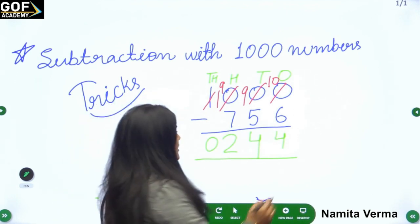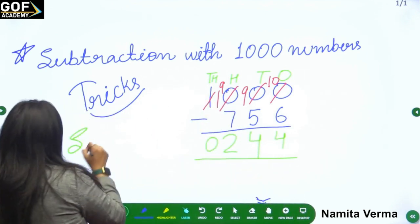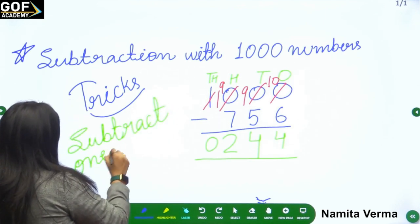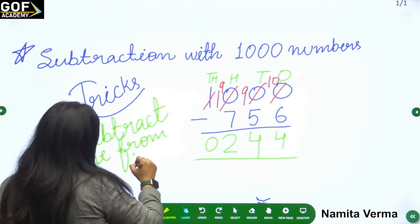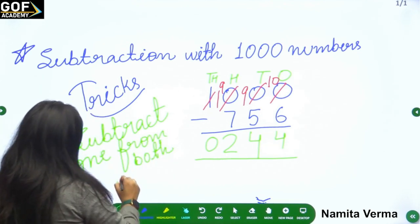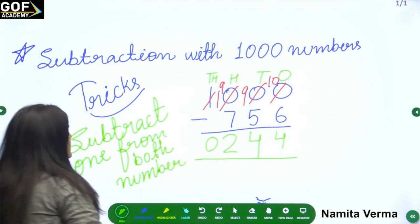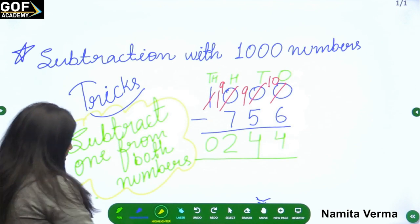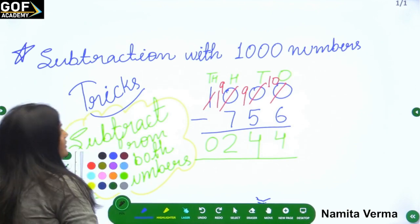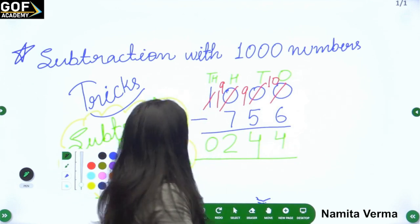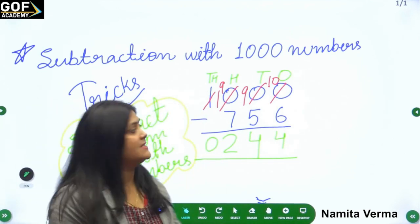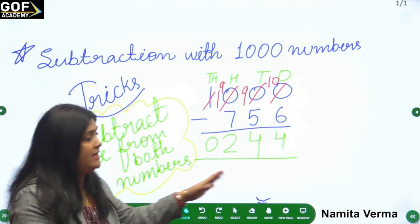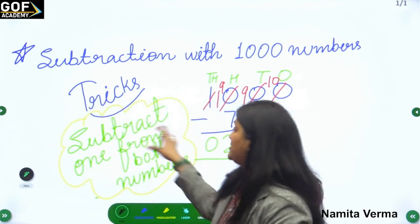Now I will tell you a trick — note it down, this is very important. The trick is: subtract one from both numbers — the top number and the bottom number. We have 1000 minus 756. Instead of regrouping, we will subtract one from both sides.